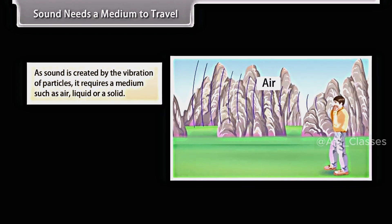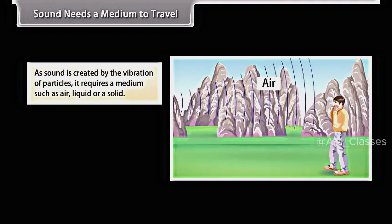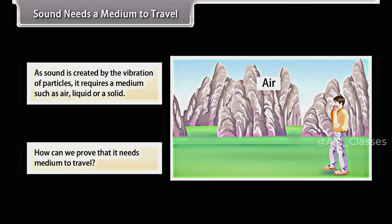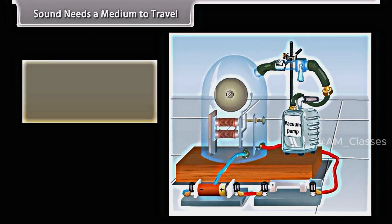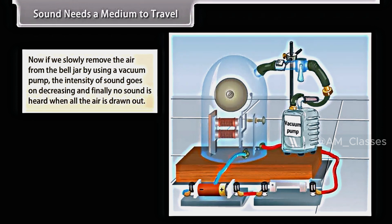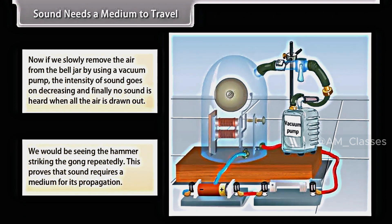Sound needs a medium to travel. As sound is created by the vibration of particles, it requires a medium such as air, liquid, or a solid. But how can we prove that it needs medium to travel? Let's see. Look at this figure. Here, an electric bell is suspended inside an airtight glass bell jar connected to a vacuum pump. As the electric bell circuit is completed, the sound is heard. Now, if we slowly remove the air from the bell jar by using a vacuum pump, the intensity of sound goes on decreasing. And finally, no sound is heard when all the air is drawn out. We would be seeing the hammer striking the gong repeatedly. This clearly proves that sound requires a medium for its propagation.